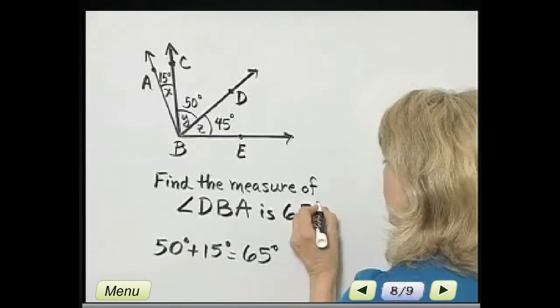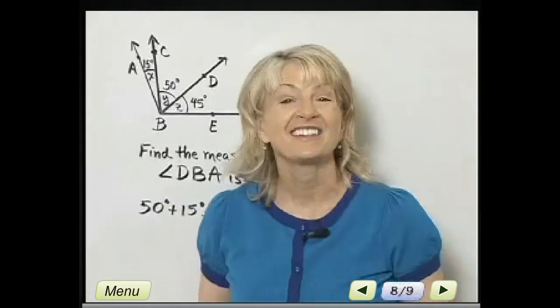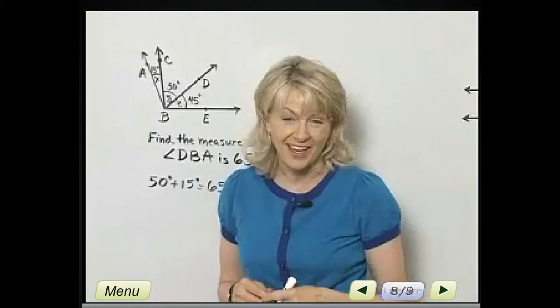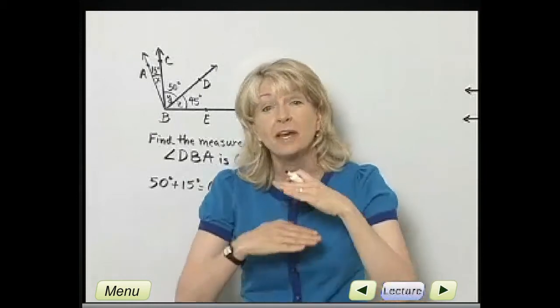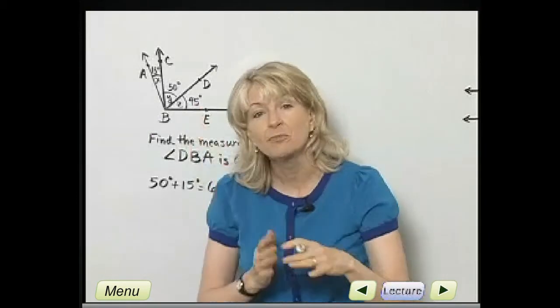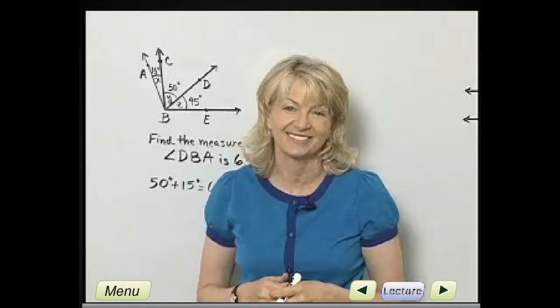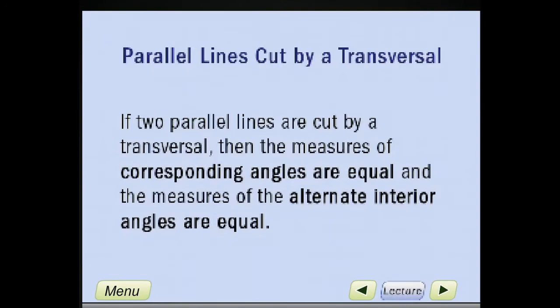A little bit about finding the sum of degree measures of angles. And now let's look at something special about parallel lines cut by what we call a transversal. If two parallel lines are cut by a transversal, then the measures of corresponding angles are equal, and the measures of the alternate interior angles are equal.